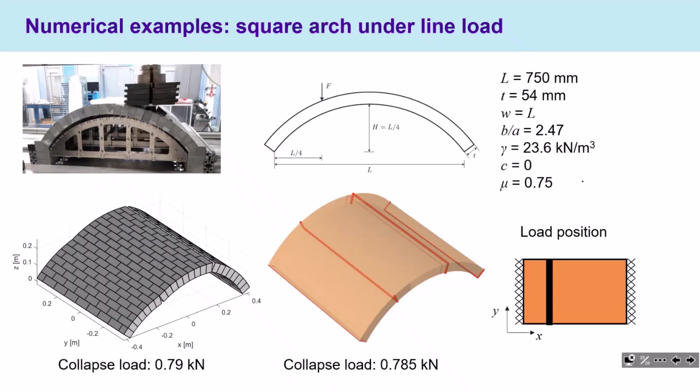The method is still under validation. We present some first results using a square masonry arch tested by colleagues Colin and Serena. Considering a line load, we expect a two-dimensional result. On the left we have the result from rigid block limit analysis, and on the right the result from homogenized DLO. The result is depicted with a solid model where red lines show openings. There is a good correspondence as the red lines correspond to crack openings in the rigid block model.